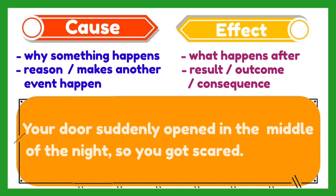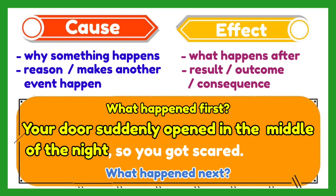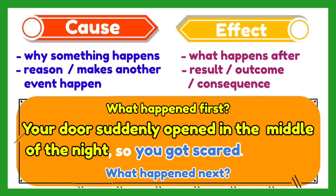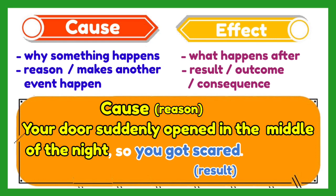For example: your door suddenly opened in the middle of the night, so you got scared. What happened first is your door suddenly opened in the middle of the night. What happened next, or your reaction, was you got scared. If we analyze it, your door suddenly opening in the middle of the night is the reason why you got scared. So this is the cause, and you getting scared is the effect.